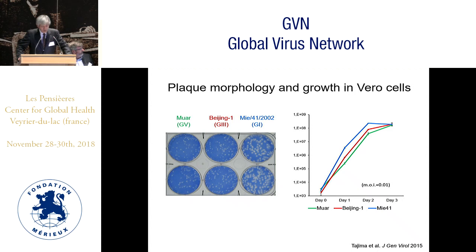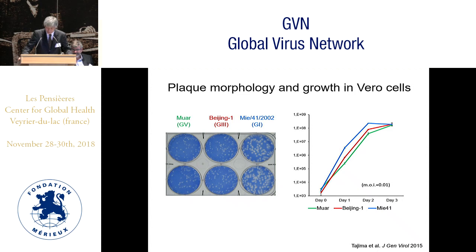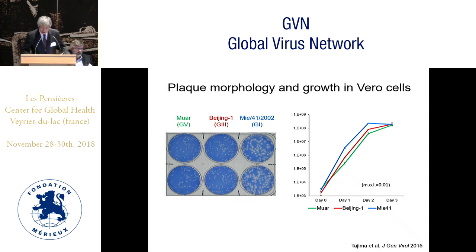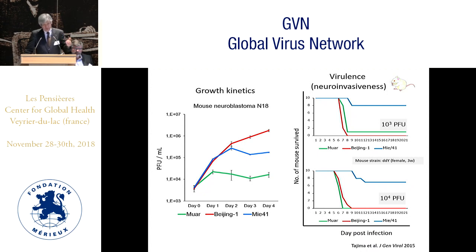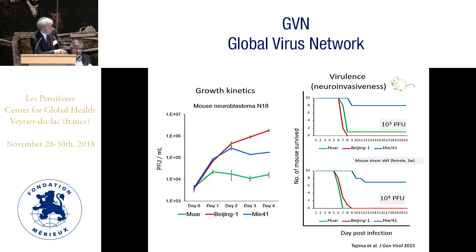We studied the replication capacity of JEV in various cells. The Muar strain is genotype 5, Beijing-1 strain is genotype 3, and MEA-41 is genotype 1. All viruses replicated in various cells; however, genotype 1 virus replicated more than the other two genotypes. The Muar strain forms very small plaques in Vero cells. There is a big difference in replication capacity in mouse neuroblastoma cell line N18 between genotype 5 and genotypes 1 and 2.